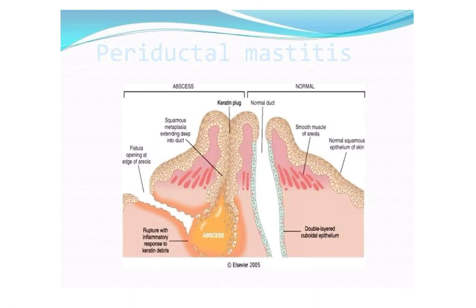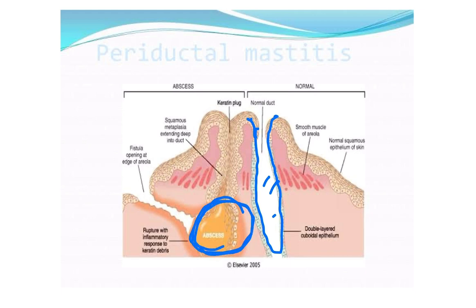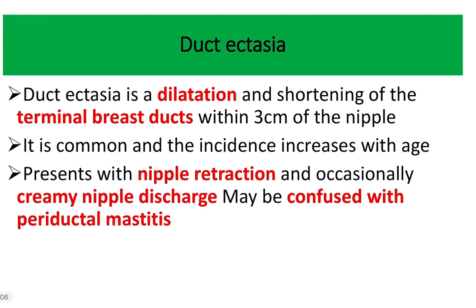Here we can see a normal breast and abscess formation. Periductal mastitis occurs peri-duct, meaning around the duct — outside the duct. Duct ectasia, which is different, occurs within the duct. In periductal mastitis, the abscess or inflammation occurs outside the duct. Keratin plaques are present, squamous metaplasia occurs, and sometimes a fistula may develop.